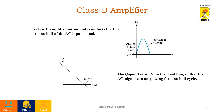Next, Class B amplifier. Class B amplifier conducts only for one half cycle of the AC input signal. So the Q-point has to be located at the cutoff region or at 0 volt on the load line, so the AC signal will swing only for one half cycle.